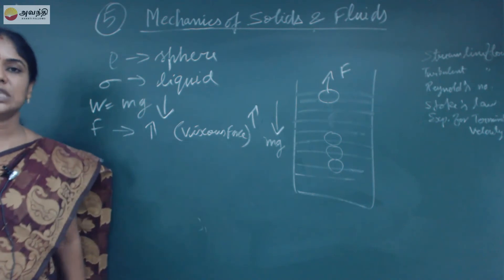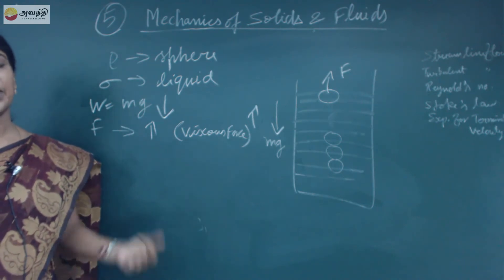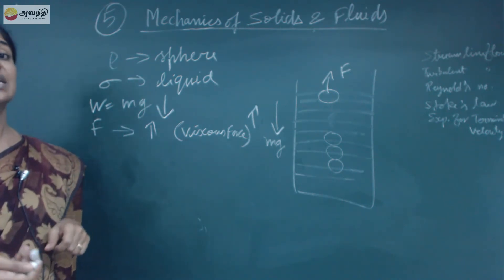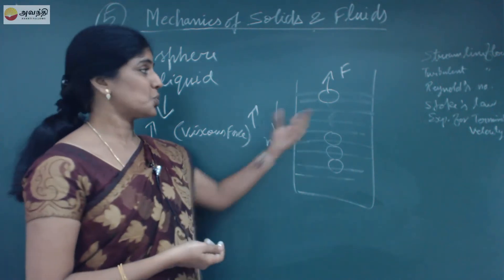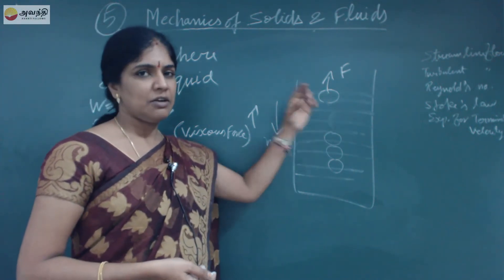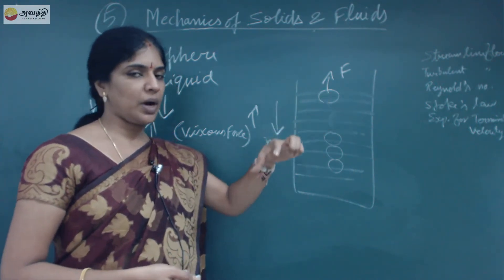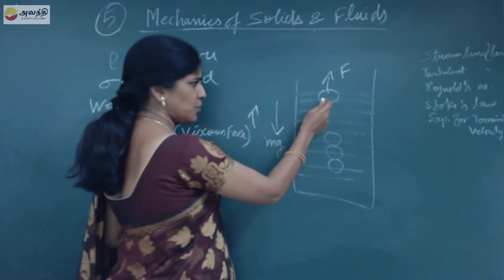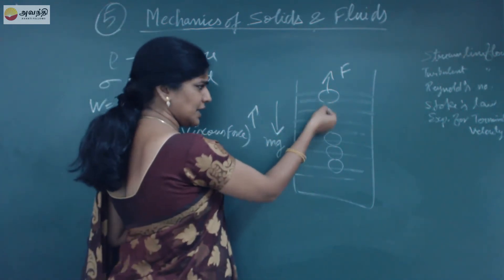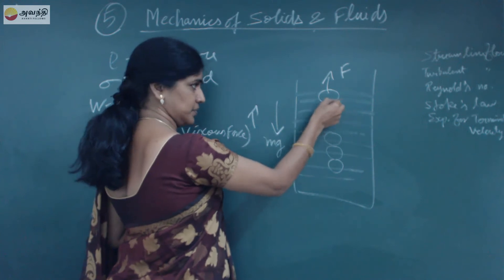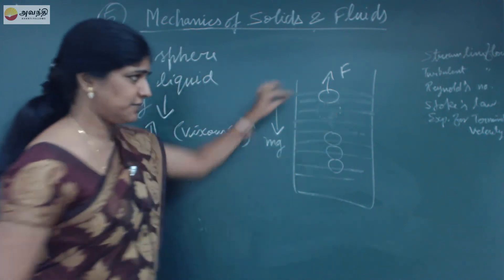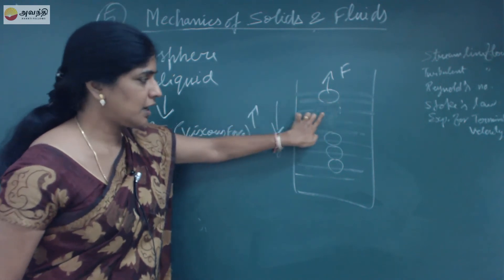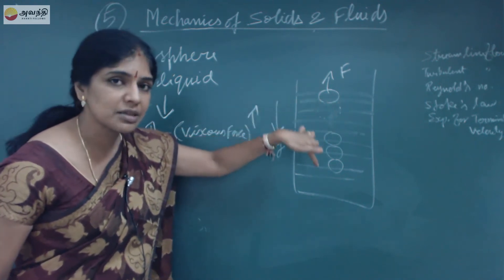Then there is the buoyant force — the upthrust. The upthrust acts upward. The sphere moves slowly through the highly viscous liquid, layer by layer, displacing the liquid as it moves through each successive position.